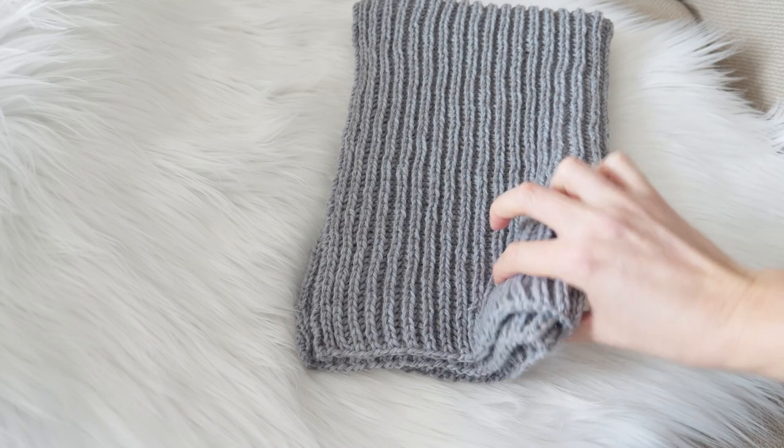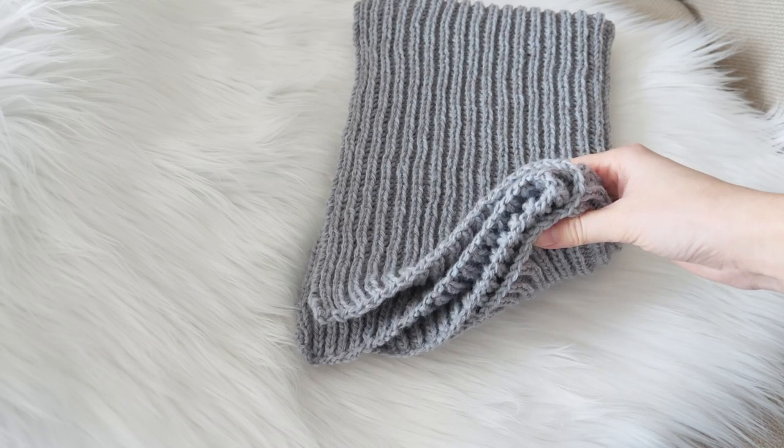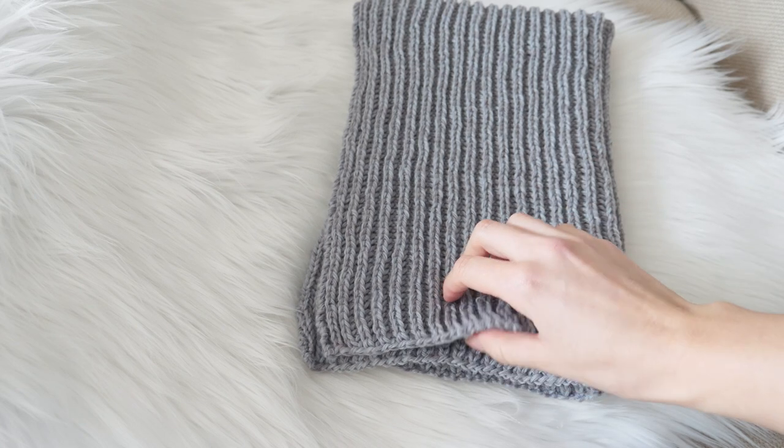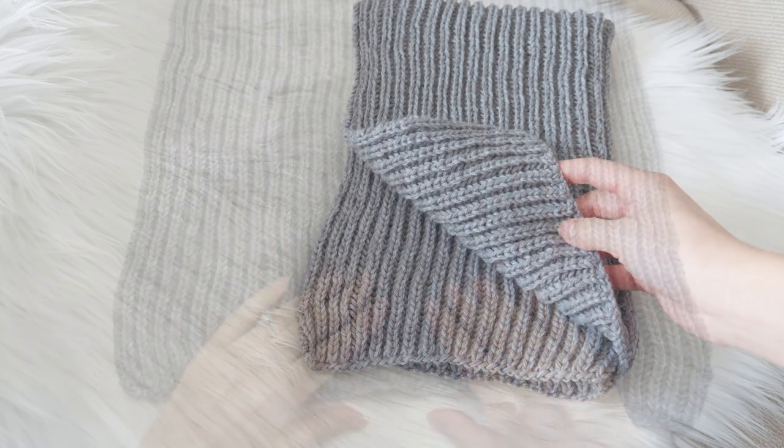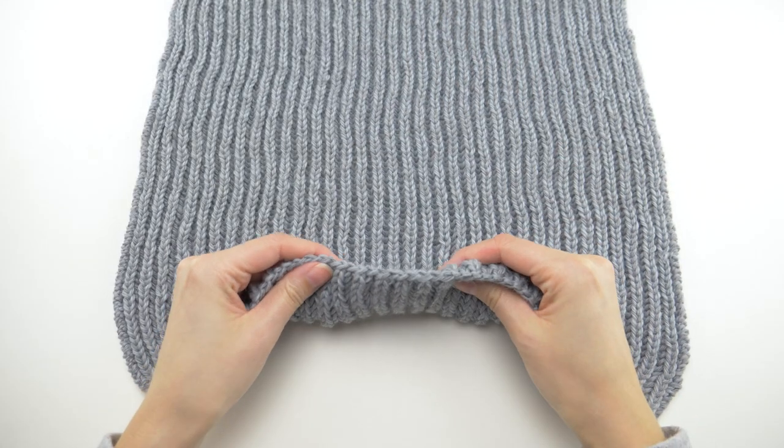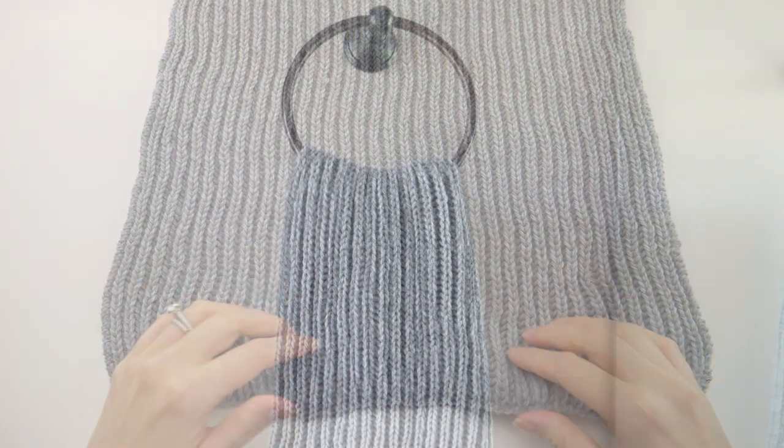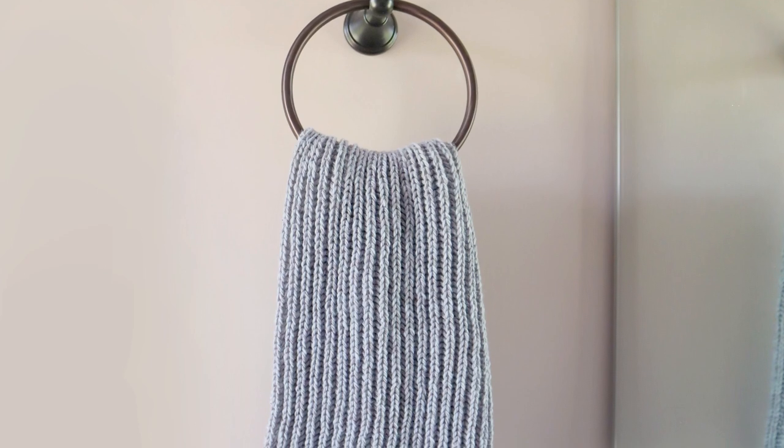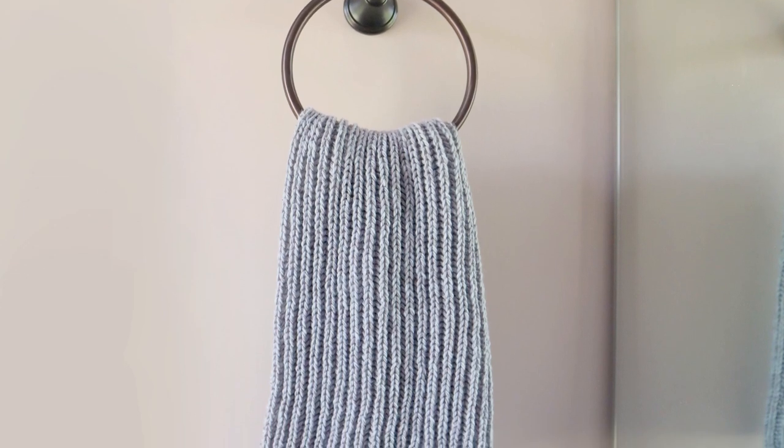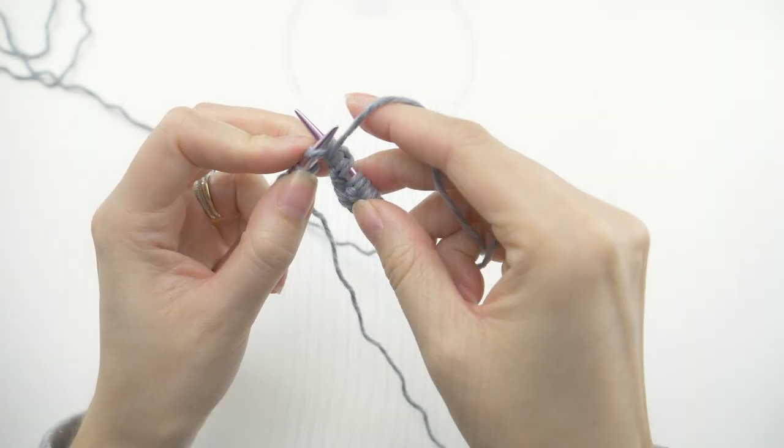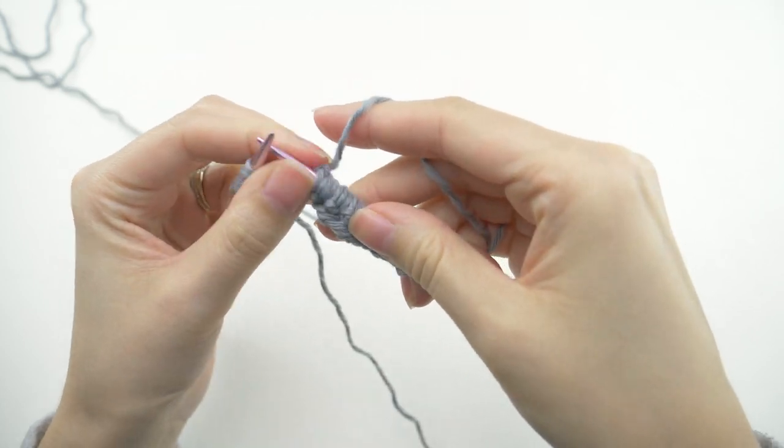The Brioche Stitch makes a uniquely textured fabric that's great for all sorts of projects, but I personally love it for hand towels. It's thick and squishy, and when paired with a nice cotton yarn, it absorbs water really well. Use this one in your kitchen or in your bathroom, or just make one for both if you can't decide. The step-by-step tutorial is coming up.